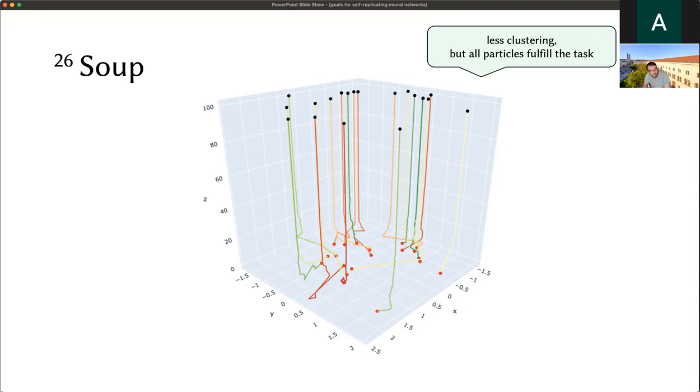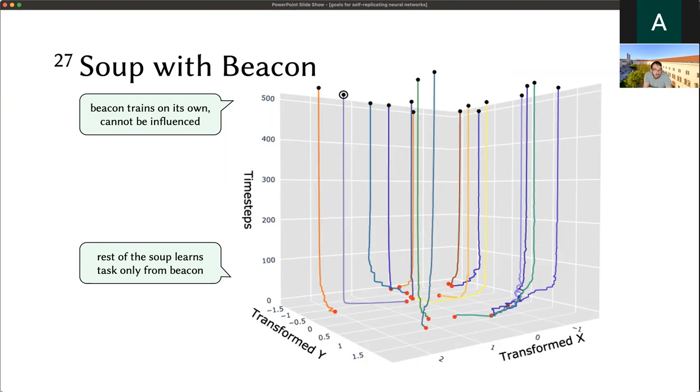We have one more interesting experiment. We introduced something we called a beacon. A beacon is a special particle that is trained on its own for self-replication and for the task we want to solve, in this case addition. But it cannot be influenced by any other network, so no weights can be written into it. It's basically on its own except for one thing: the other networks can see this beacon particle and can learn the task from the beacon particle, which is very nice. It's an instance of guided self-organization. We don't have to introduce the auxiliary additional tasks to all single particles for the training. It suffices if we introduce the task just to this one beacon particle that remains constant throughout the whole evolution. Still, in the end all the particles end up being self-replicating and fulfilling the task.